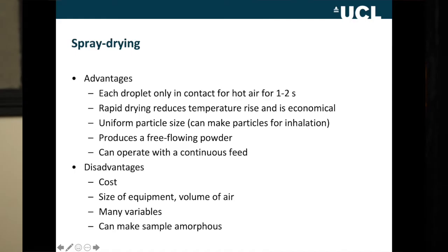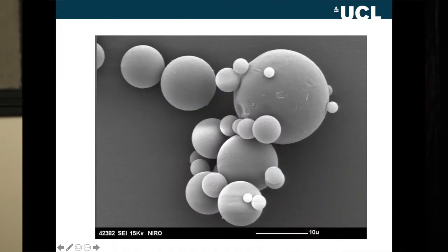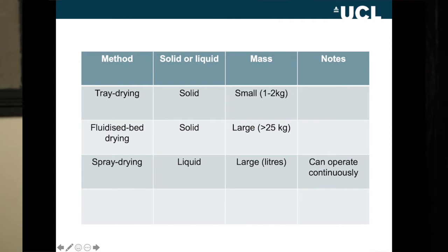There are some downsides: spray drying is expensive to buy, it's large, and you need a huge amount of air. You can also make the sample amorphous. But overall this is the main method of drying used commercially for liquids. On the screen is an SEM — scanning electron microscopy — image of spray dried particles. The scale bar is 10 microns. You can see the particles are both small and round, making them ideal for inhalation. So spray drying is the method of choice if the material is a liquid, it's large in volume, and particularly if it's for inhalation.